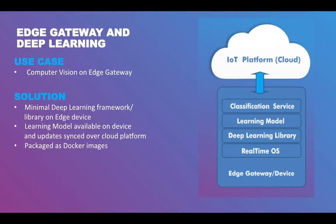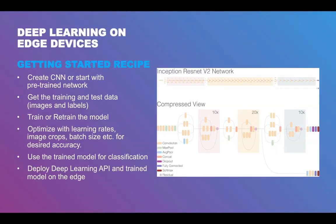How do you go about implementing this? One approach is to start off by building your own convolutional neural network or start with a pre-trained network like an Inception model. Next, you would train the network, or just retrain the last layer in case of a pre-trained network. For instance, you could take the existing Inception model released by Google and retrain only the final layer from scratch using your set of images. This process is known as transfer learning, and it cuts down training cycles from days to a few hours depending on your training data. Next, you would optimize your network by trying various learning rates, image crops, and batch sizes to get the desired level of accuracy.